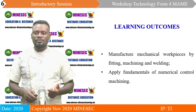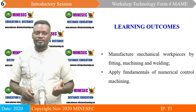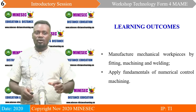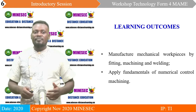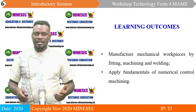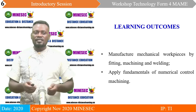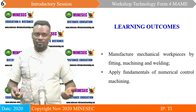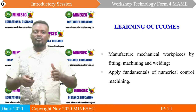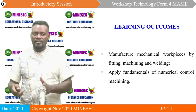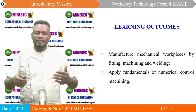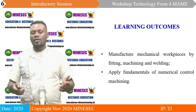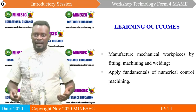The learning outcomes require that at the end of this module, you should be able to manufacture mechanical workpieces by fitting, machining, and welding. Fitting here involves using hand tools like the chisel, files, and hacksaw. Machining refers to working on the different workstations — the lathe machine, the milling machine, the drilling machine, and so on. Under welding, we are going to be talking about electric arc welding. At learning outcome point two, we are going to apply fundamentals of numerical control machining.